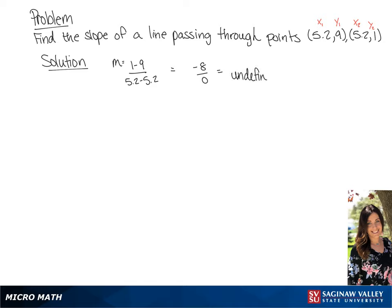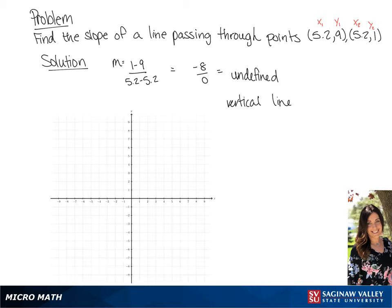An undefined slope means that we are going to have a vertical line. To illustrate this, we're going to graph our points (5.2, 9) and (5.2, 1), and we are going to draw our line. This shows us our vertical line with an undefined slope.